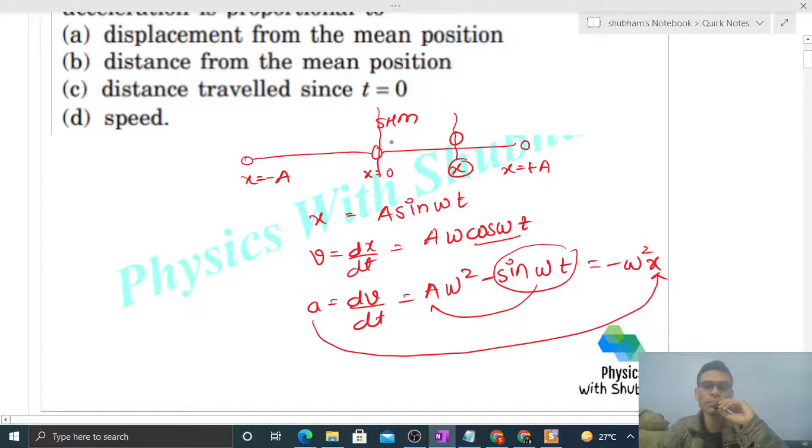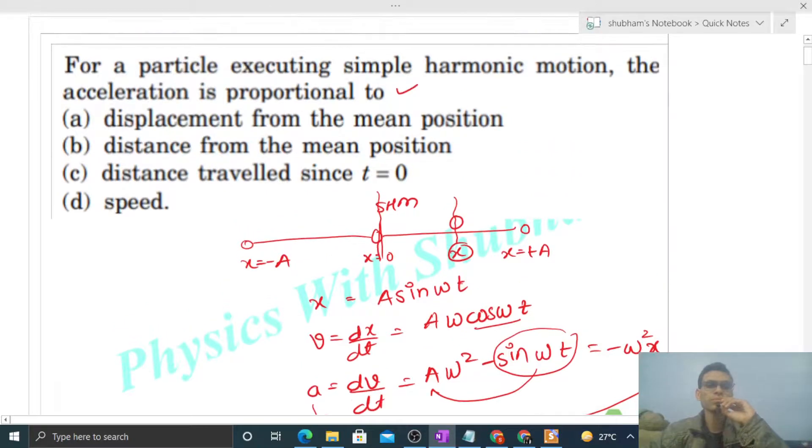So option A is correct. Option B, see, is not correct, because when the particle is at some x coordinate, at that time the displacement is x, but distance is not necessarily x.